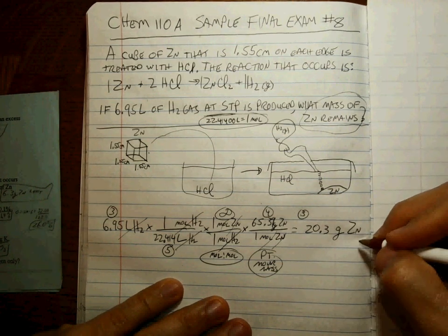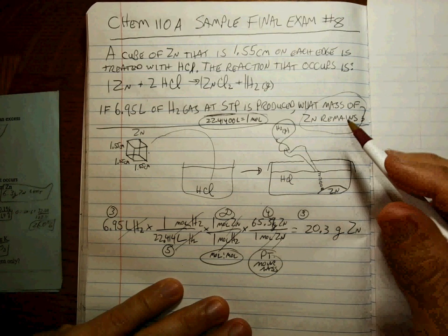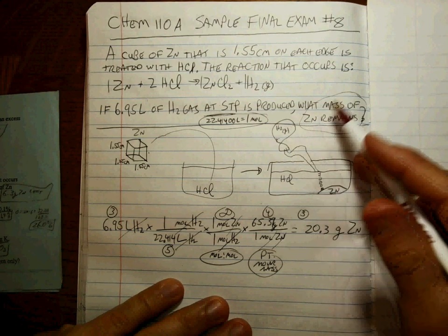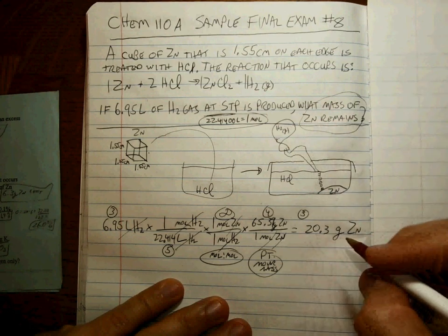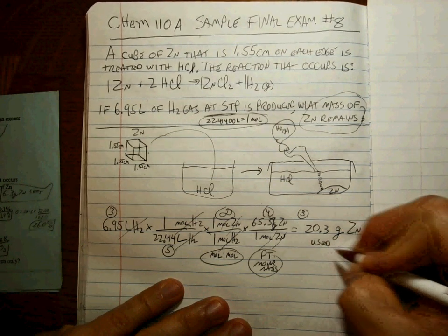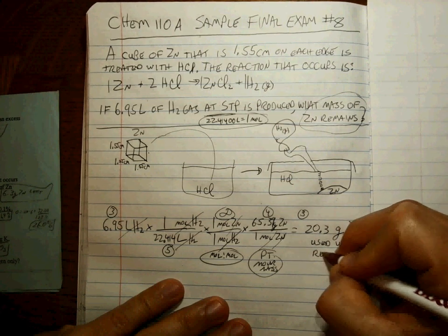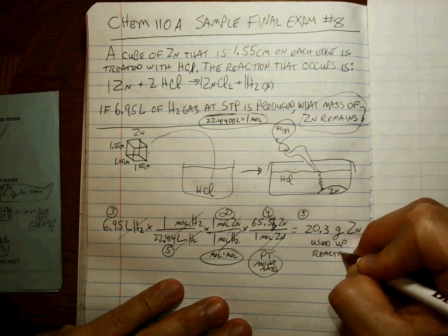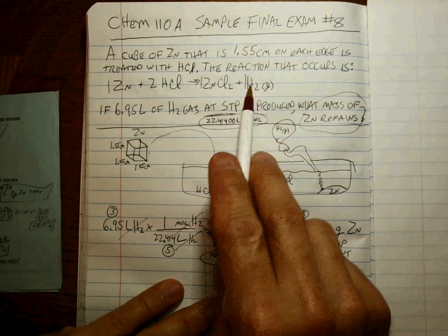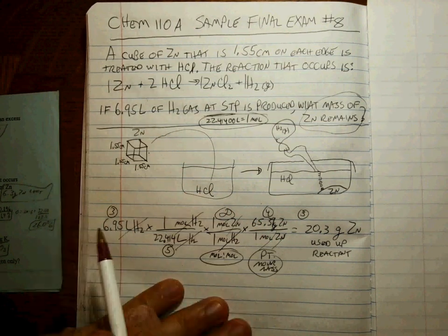You can't just say 20.3, or 20.3 grams — you have to know more. Remember: ten sandwiches made means twenty slices of bread used. This 20.3 grams is the amount of zinc that was used up or reacted, because the amount of product produced comes from the amount of reactant that reacted.